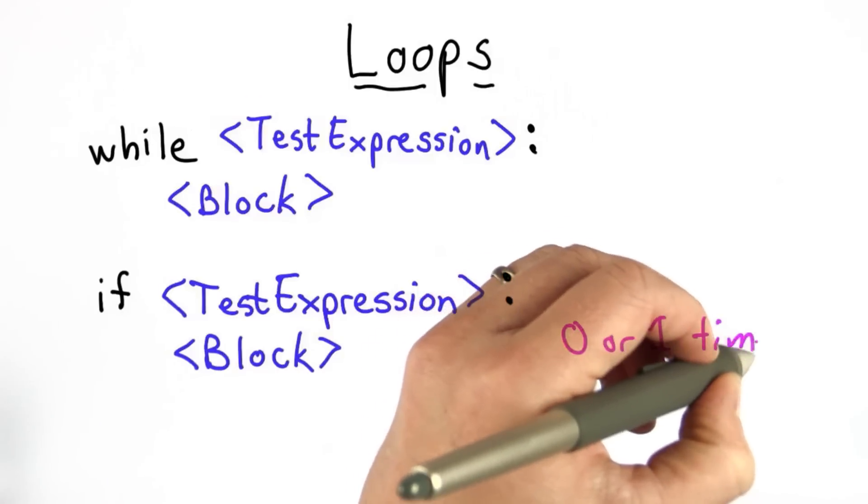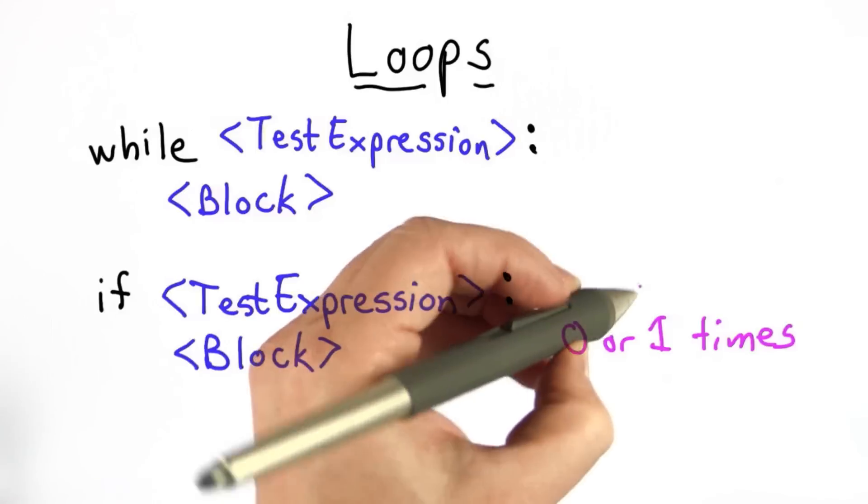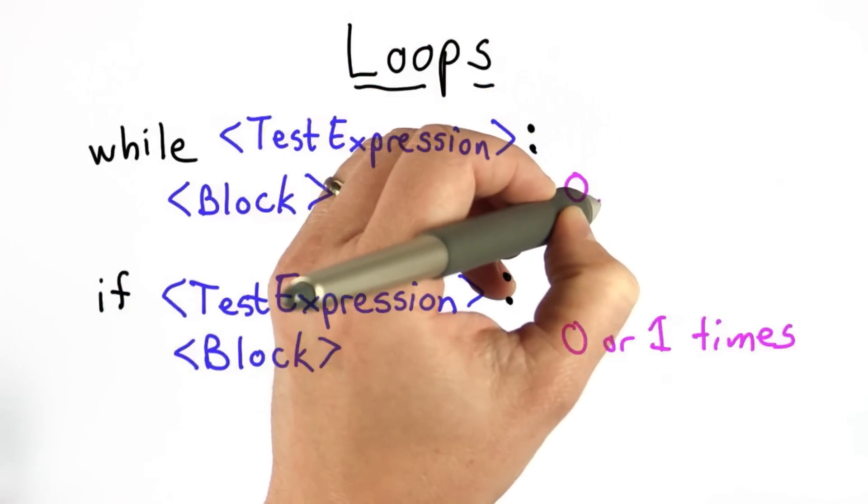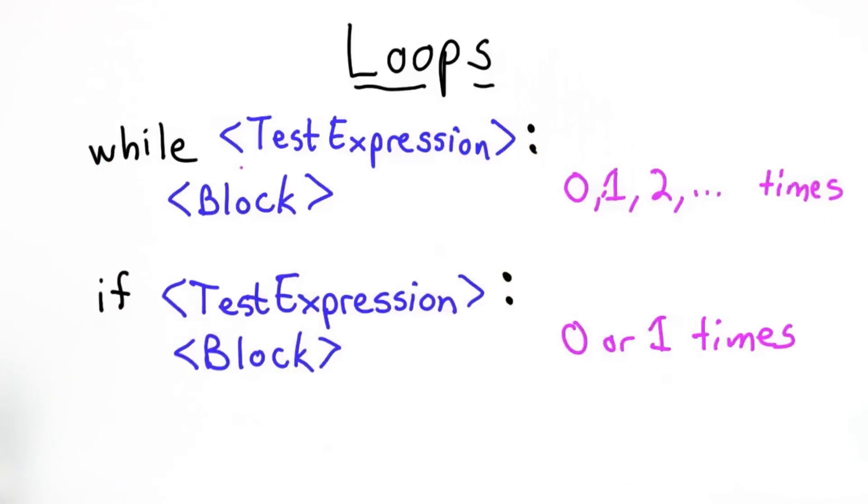With if, the block executes either 0 or 1 times, depending on whether the test expression is true. With while, the block can execute any number of times. It keeps going as long as the test expression is true.